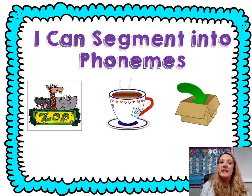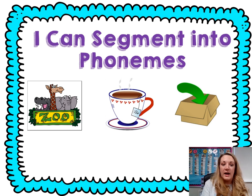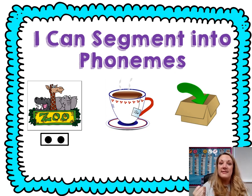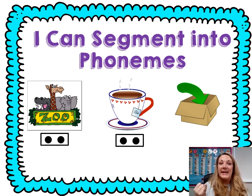Grab your imaginary slinky so we can stretch out our words and hear each sound. Ready? Zoo — Z — U — count it: Z — U — two. We heard two sounds. T — E — count it: T — E — two sounds. That arrow is pointing in the box — let's stretch: I — N — count it: I — N — two sounds.